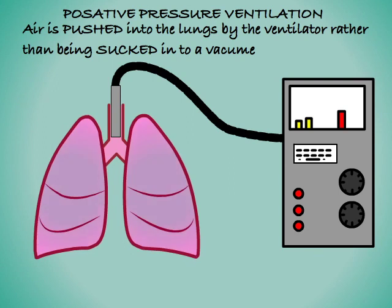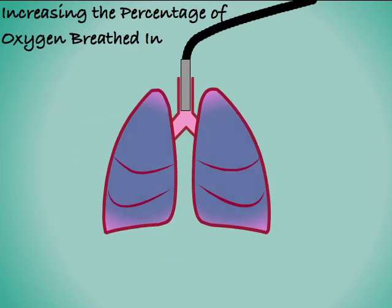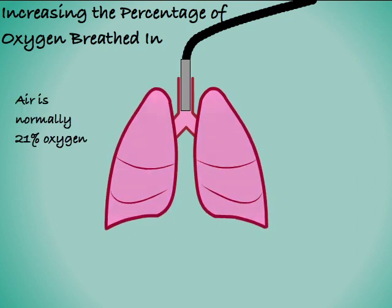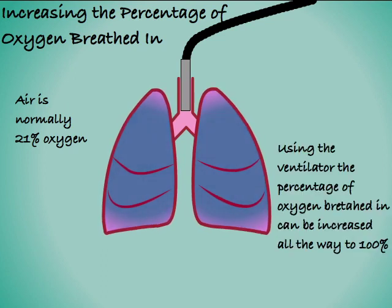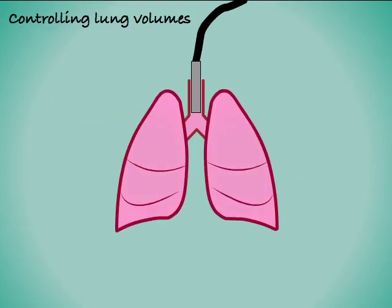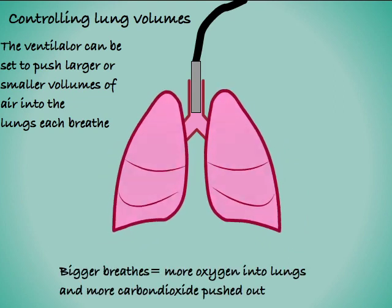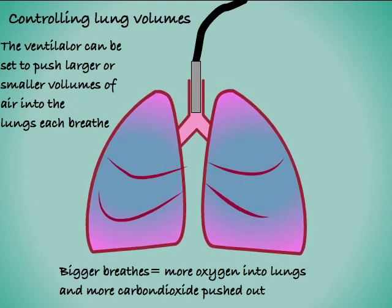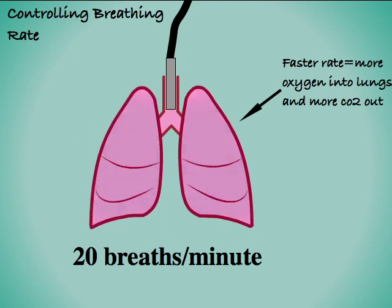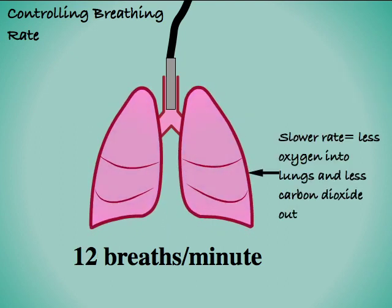Now that we've taken over control of the lungs, we can exert some control over how they function. For example, if we're concerned that the patient is not getting enough oxygen, we can increase the percentage of oxygen in the inhaled air — if we want, we can give the patient 100% oxygen using the ventilator. We can also increase the size of each breath the patient takes, as bigger breaths mean inhaling more oxygen and exhaling more carbon dioxide. We can also make the lungs work faster or slower, again increasing the amount of oxygen being drawn into the lungs and the amount of carbon dioxide breathed out.